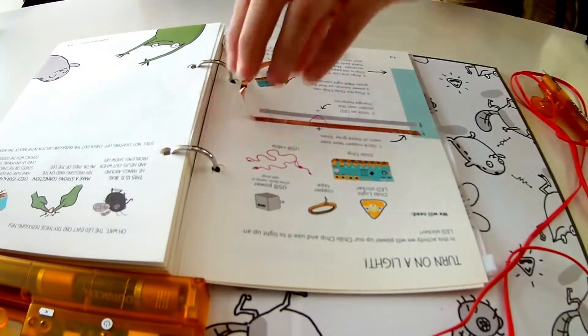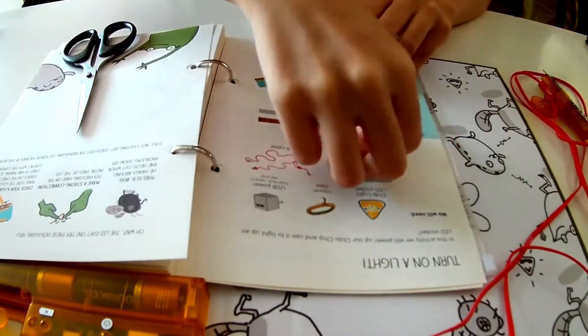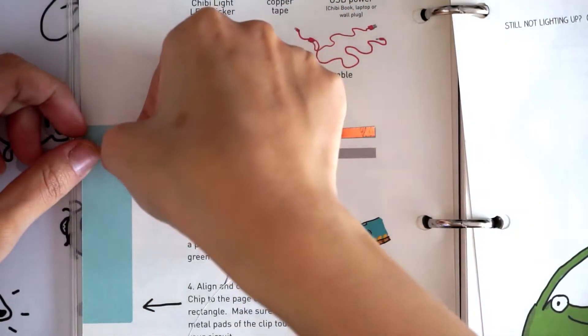Snip off the end with scissors or tear with your fingers. Repeat for the other gray line.